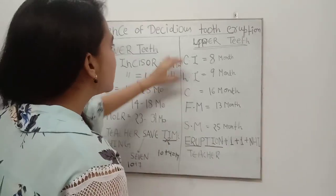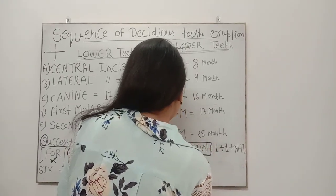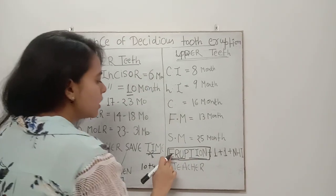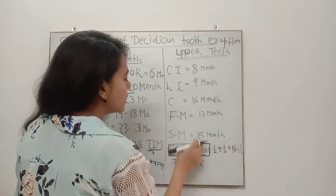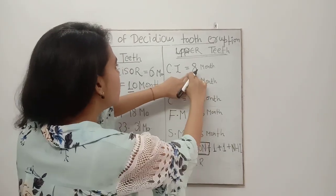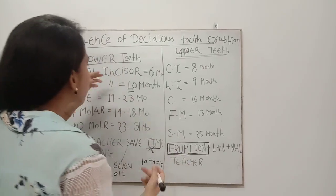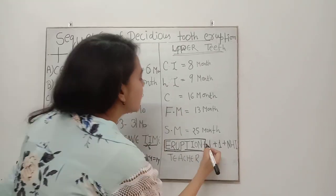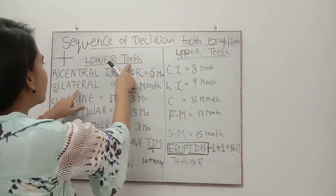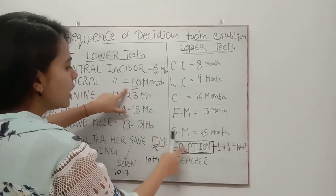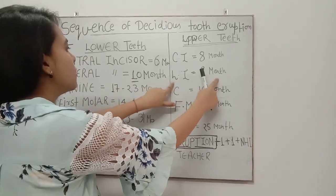To remember the upper central incisor: the word 'ERUPTION' has 8 letters — E-R-U-P-T-I-O-N — so the upper central incisor erupts at 8 months. For the rest, simply subtract 1 from the corresponding lower teeth values. Lower lateral incisor is 10 months, minus 1 gives 9 months for the upper lateral incisor.